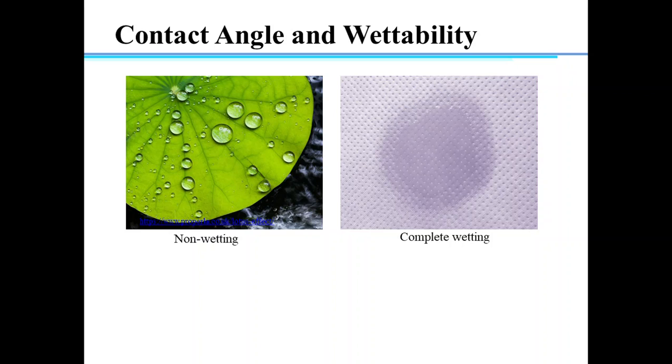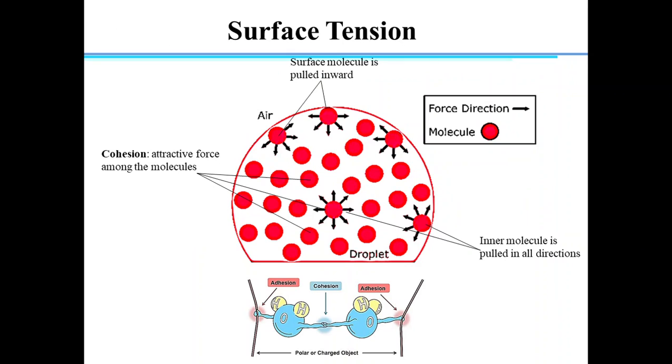So, what could be the reason that the water does not spread out on all the solid surfaces and remains in spherical droplet form? To understand this, first we need to understand surface tension.